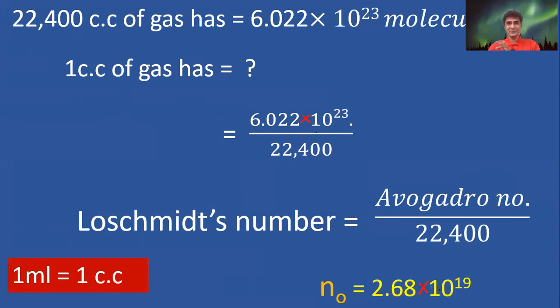1 cc of gas: If you simplify Avogadro number by 22,400, the simplified value is 2.68 × 10¹⁹. Interesting. Very simple.